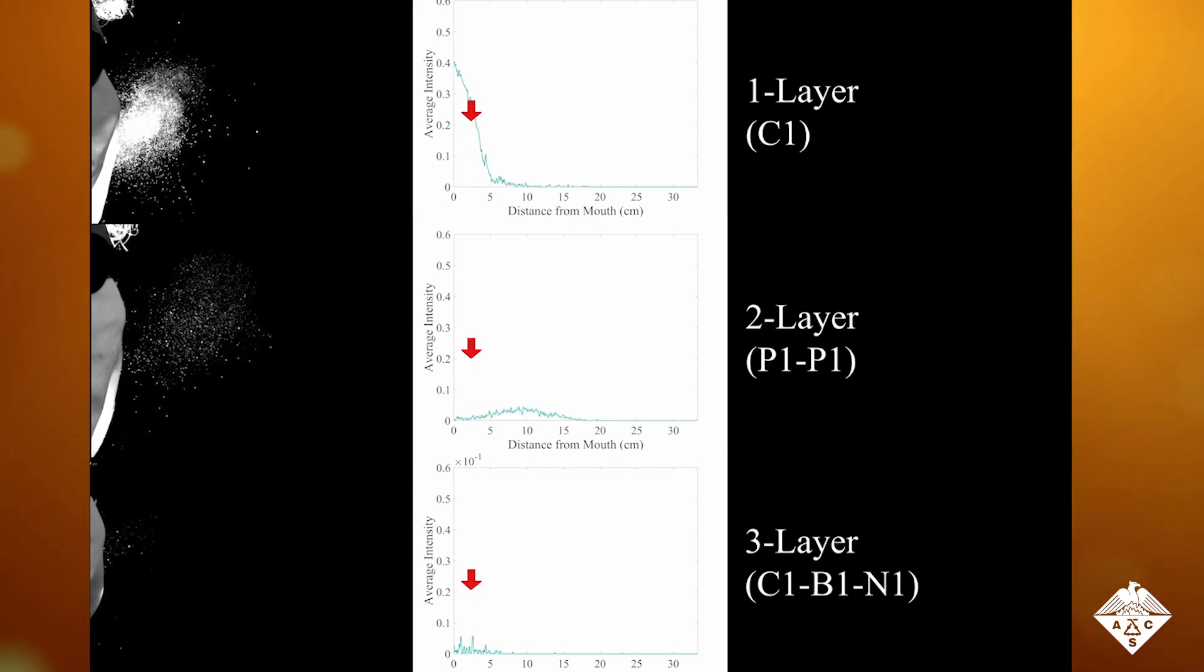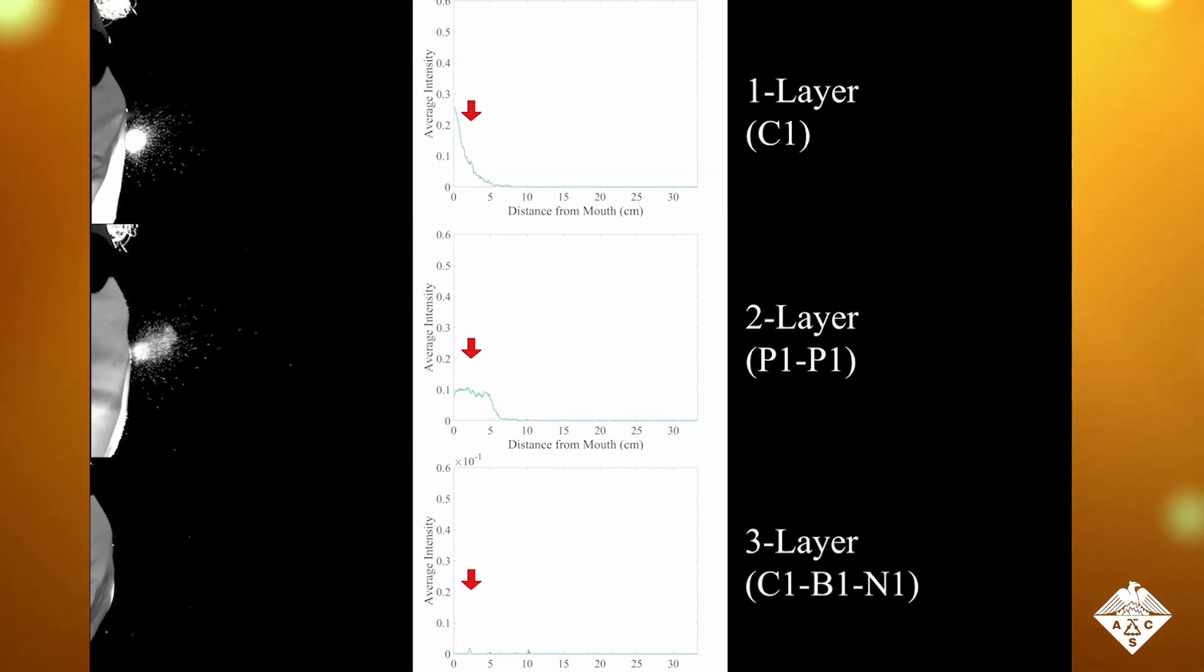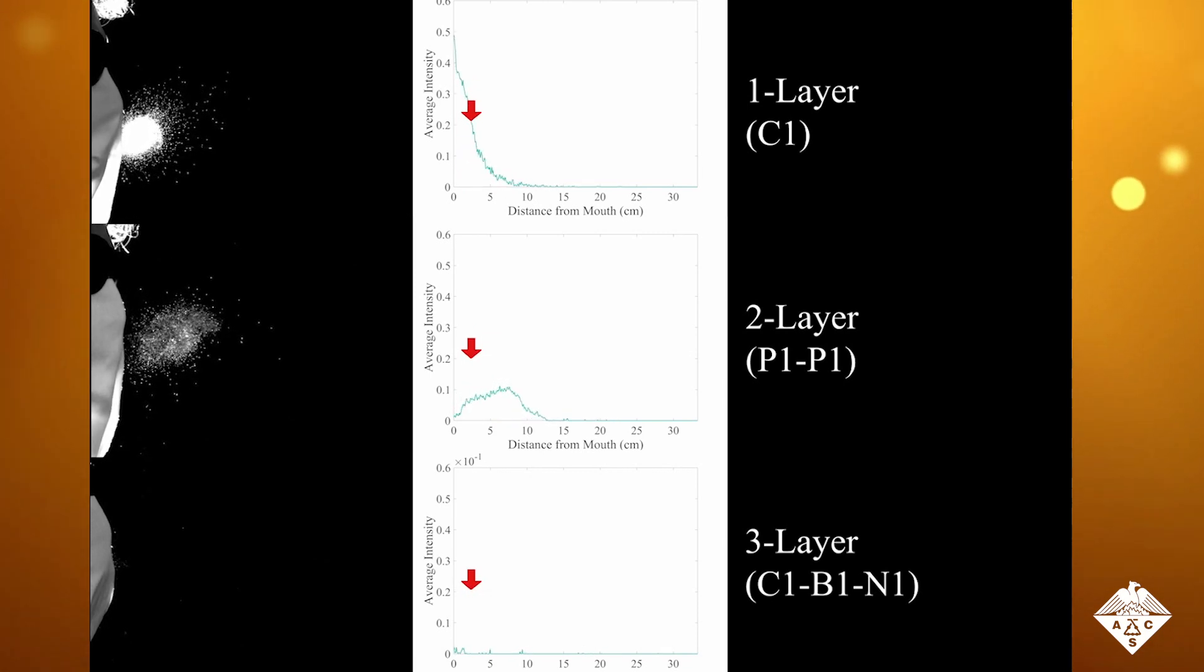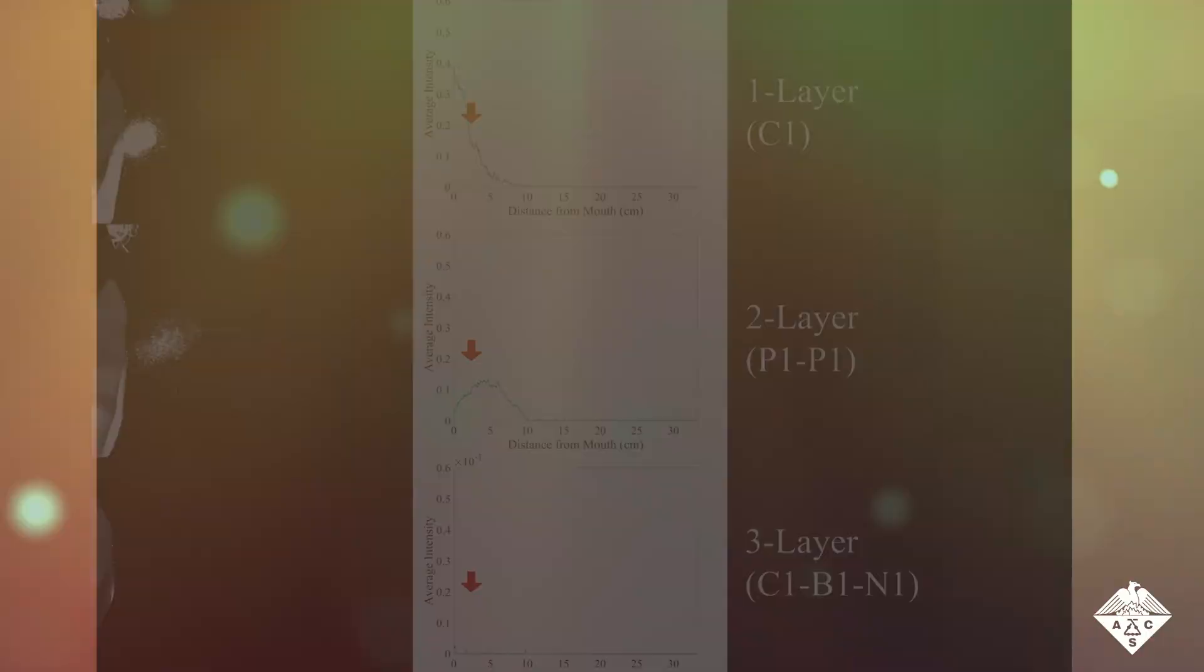With each fabric layer, the droplet blocking capability improved by more than 20 times. Interestingly, all of the three-layer cloth combinations the researchers tested were more effective than a three-layer surgical mask.